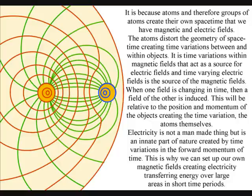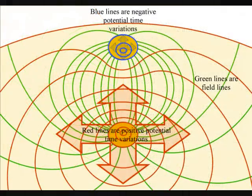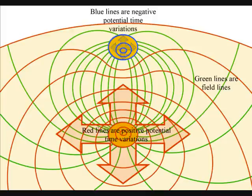It is time variations within magnetic fields that act as a source for electric fields, and time varying electric fields is the source of the magnetic fields. When one field is changing in time, then a field of the other is induced.